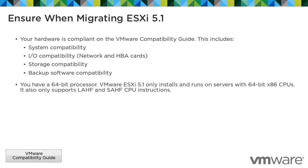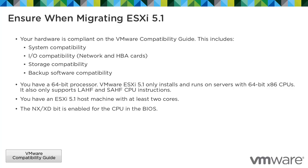Ensure you have a 64-bit processor. VMware ESXi 5.1 only installs and runs on servers with 64-bit x86 CPUs, and it only supports LAHF and SAHF CPU instructions. Ensure you have an ESXi 5.1 host machine with at least two cores, and ensure that the NX/XD bit is enabled for the CPU in the BIOS.